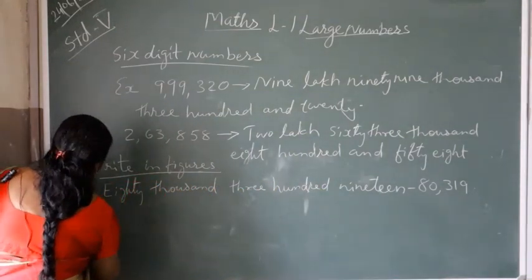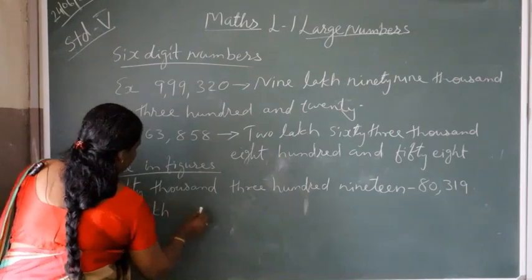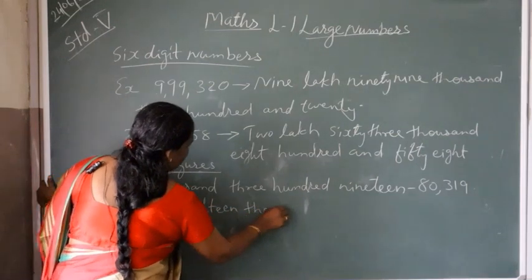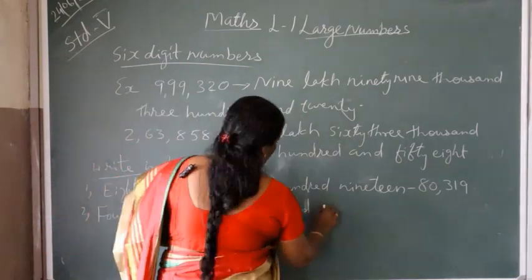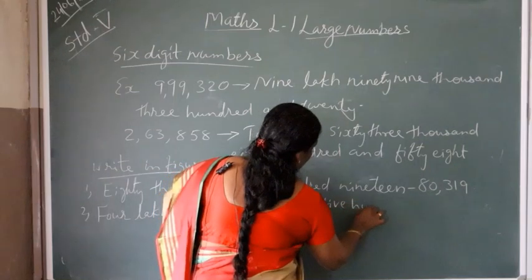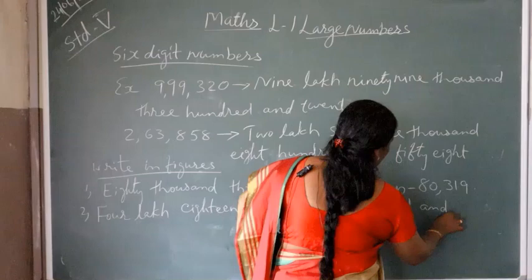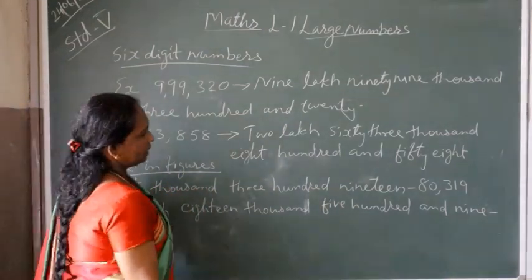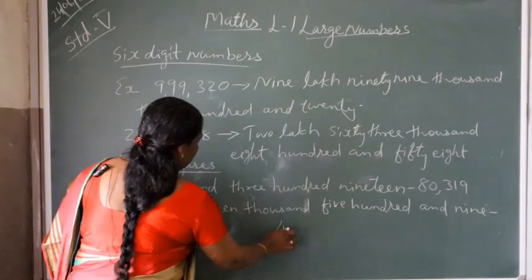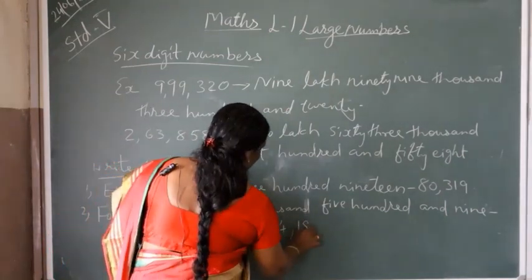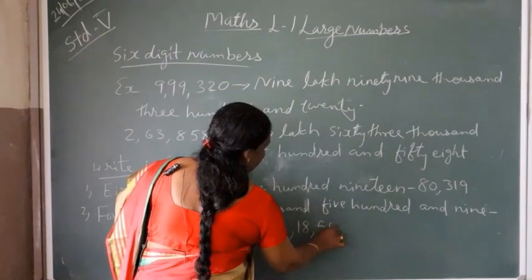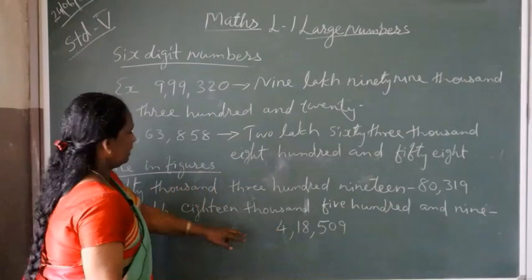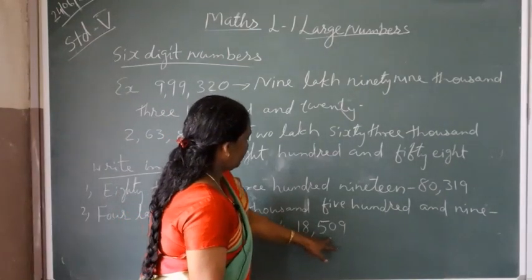Next question: four lakhs eighteen thousand five hundred and nine — 4,18,509. Four lakhs means 4 in the lakhs place, then 18,000 is 1 and 8, and 509. It is a six-digit number with places: ones, tens, hundreds, thousands, ten-thousands, and lakhs.